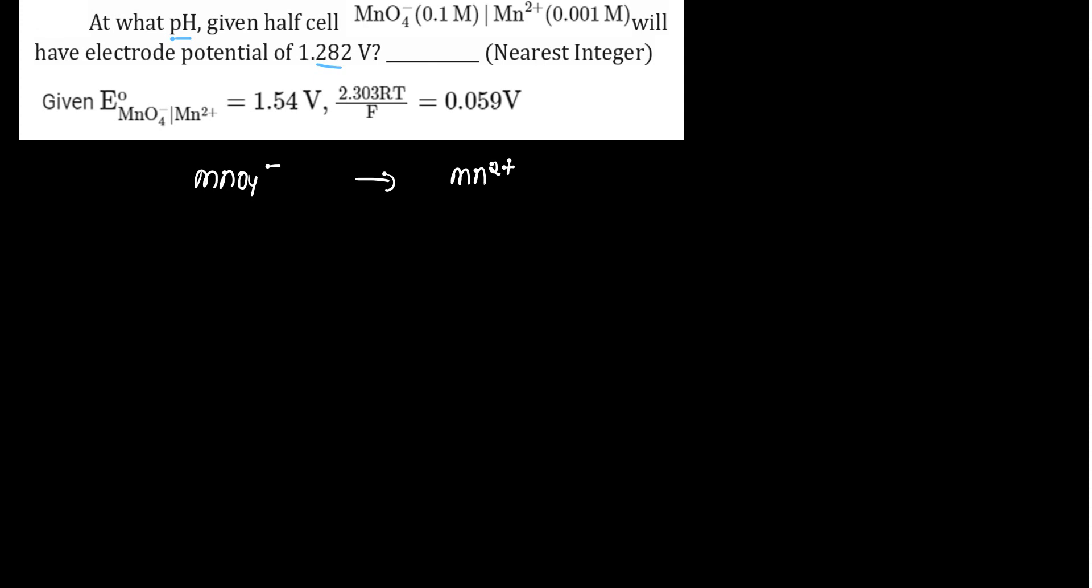Let's find the oxidation number first. Mn ka oxidation number here plus seven. Mn2 plus ka oxidation number plus two. So when we are moving from plus seven to plus two, this is five steps change and this is reduction, oxidation number decrease.